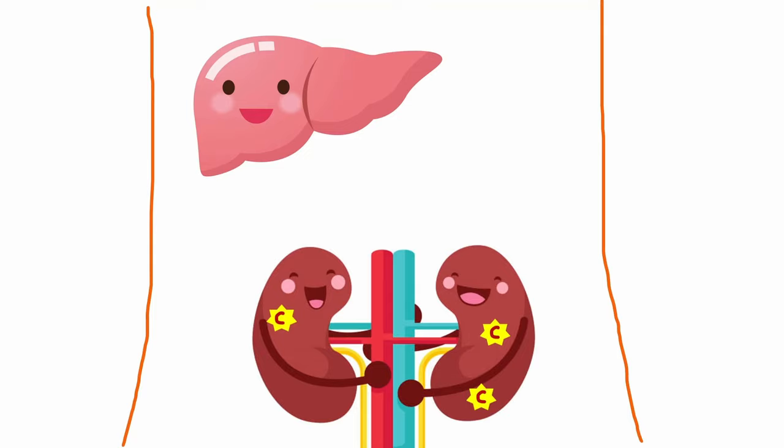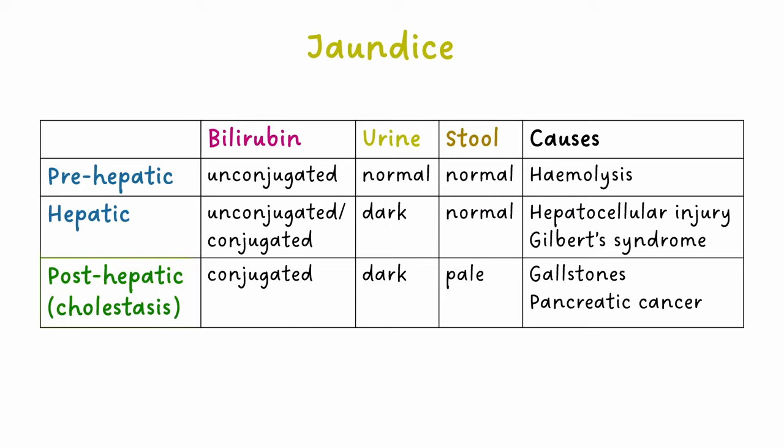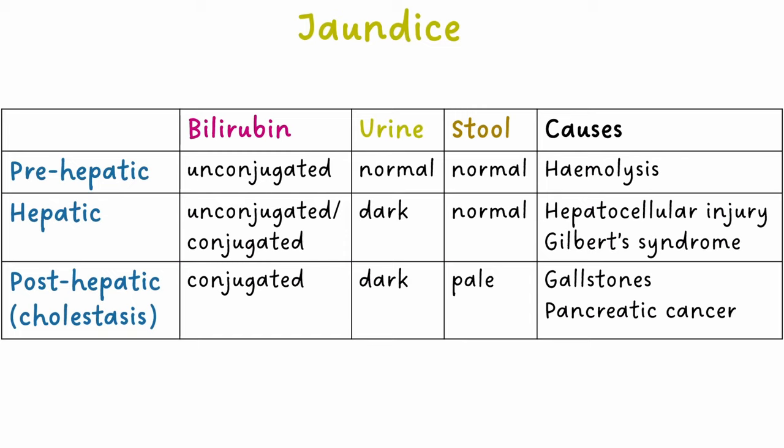Bilirubin is raised in some diseases. When it reaches a level of 60 micromoles per litre in blood, the patient will appear jaundiced. Causes of jaundice can be divided into pre-hepatic, hepatic and post-hepatic. Pre-hepatic jaundice is due to excess production of bilirubin, i.e. pathological haemolysis. Since this process occurs before the bilirubin has reached the liver, it will be unconjugated.